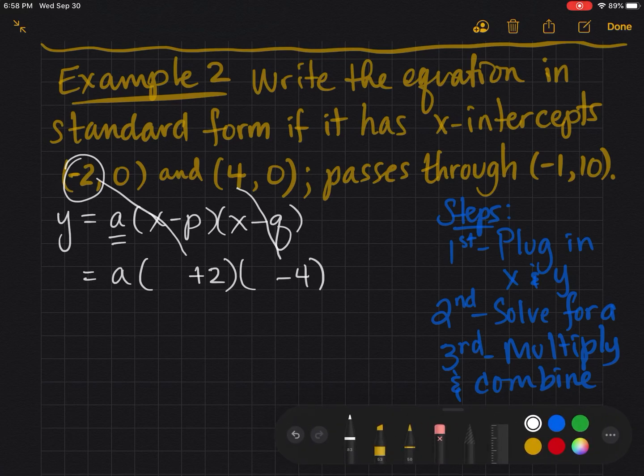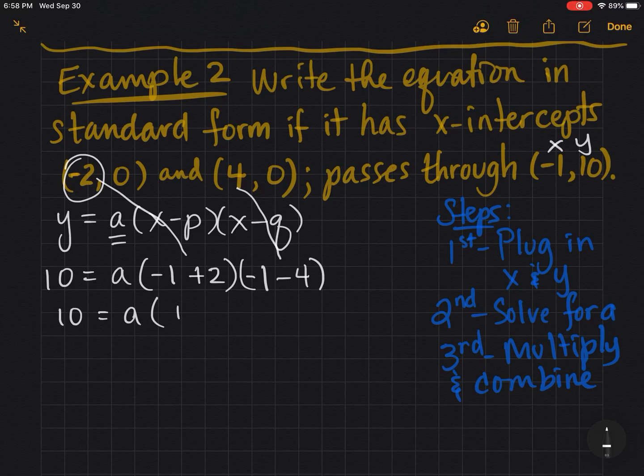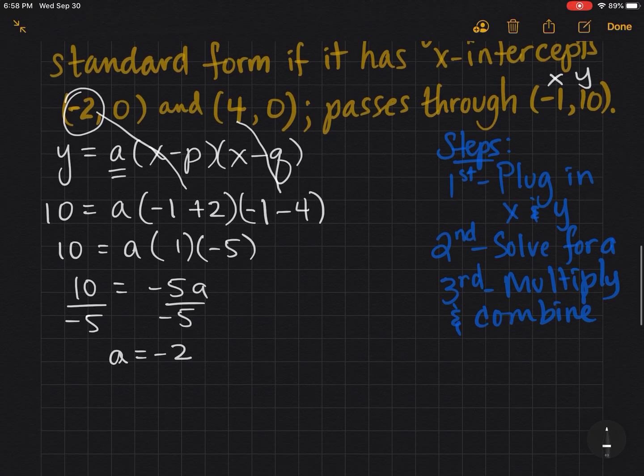I have x in two spots, notice that. My xy is here. I'm going to plug 10 in for y and -1 in for both of the x's. It's going to get really easy because we know everything except for a. So 10 = -5a and a = -2.